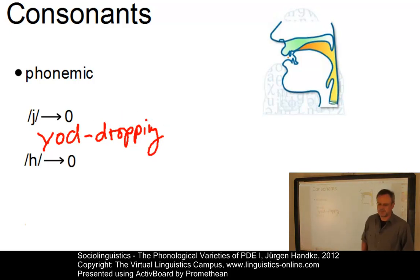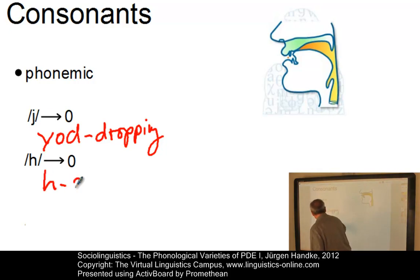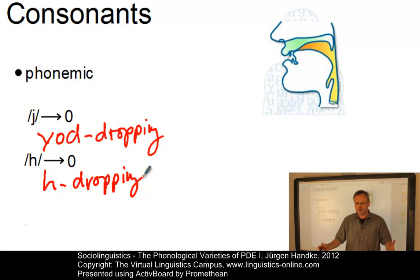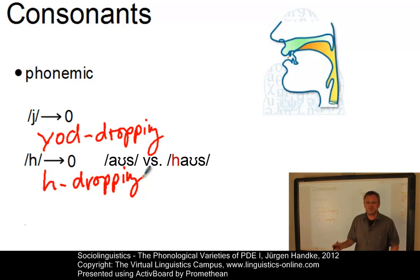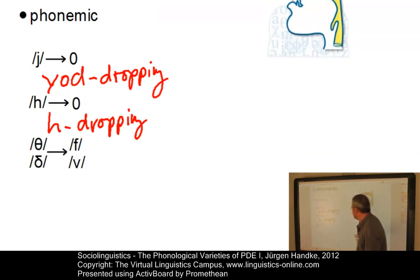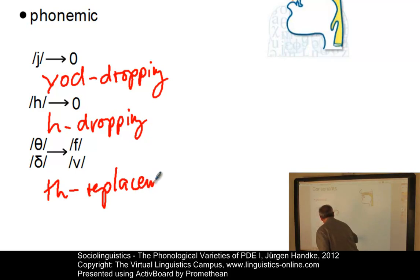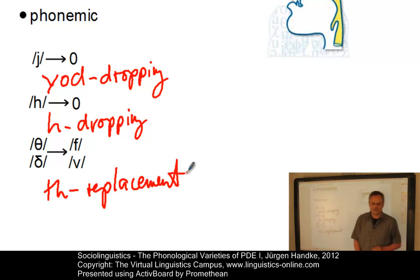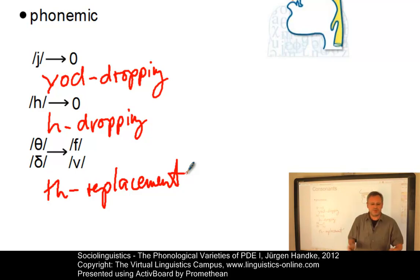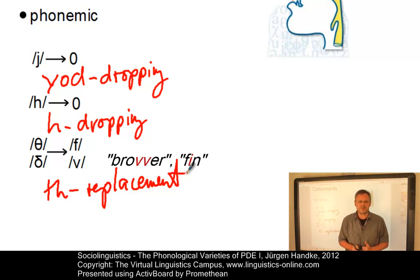Here is another one: H dropping. Depending on the variety you use, you might have the choice. For example, in Cockney in London, many people would say ''ouse' instead of 'house', where the glottal fricative is simply dropped or replaced by an initial glottal stop. A further effect is the TH replacement. In some phonological varieties, the two types of dental fricatives might be replaced by labiodental fricatives — for example, in Cockney, where people would say 'brover' instead of 'brother', or 'fin' instead of 'thin'.